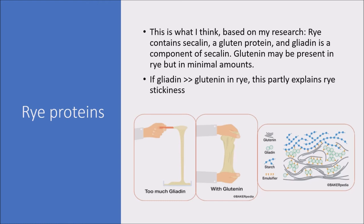If one source is correct that gliadin in rye is much higher than the amount of glutenin, this might partly explain why rye is so sticky. As shown in the figure, when there's a lot of gliadin the dough is very stretchy and can extend a long way, but it's the glutenin that actually provides elasticity or strength — so even though it can stretch, it can also bounce back. Without a lot of glutenin, which may be the case in rye, this might explain why it is very sticky and stretchy but not necessarily elastic like a wheat dough. Glutenin on its own provides that strength and elasticity, whereas gliadin contributes to the viscosity, cohesiveness, and extensibility of the dough.